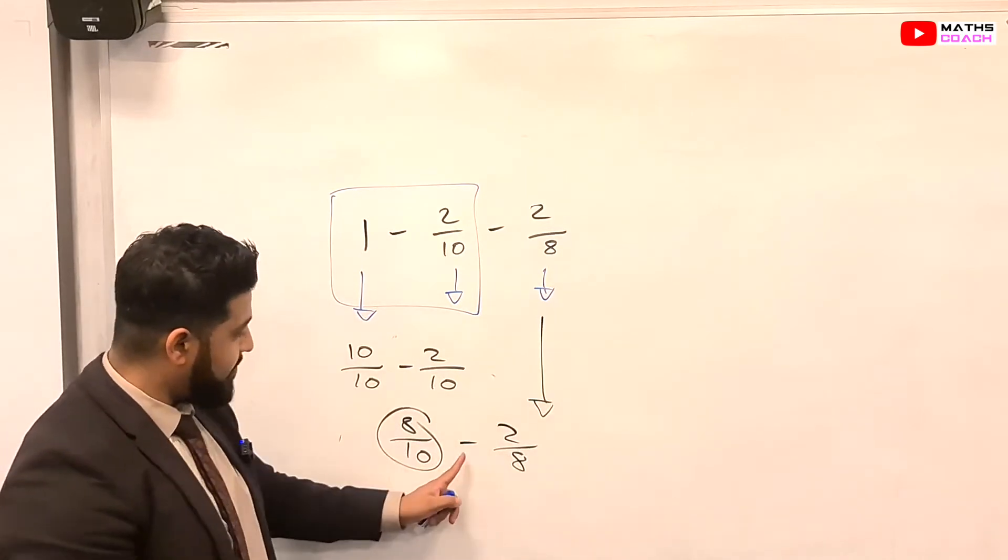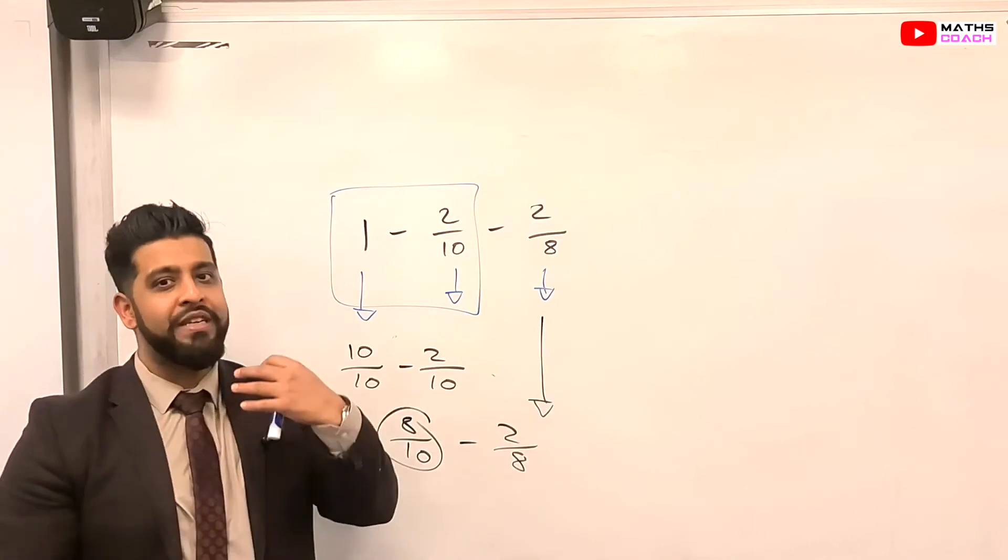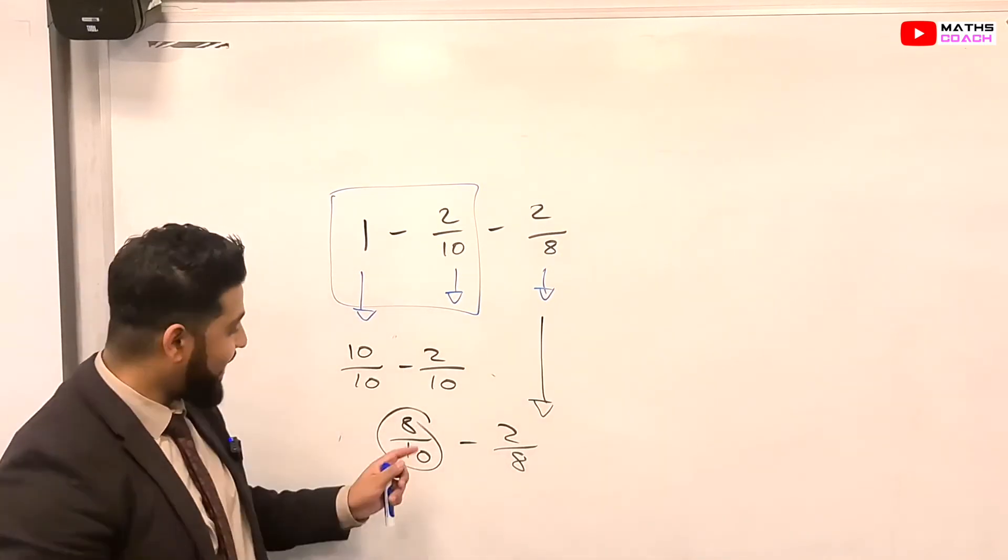So here I can have minus 2 over 8. So I've got 8 over 10 minus 2 over 8. You probably will notice something here. And you're probably crying out at home. Cancel, sir. Cancel. Yes, I can cancel down.